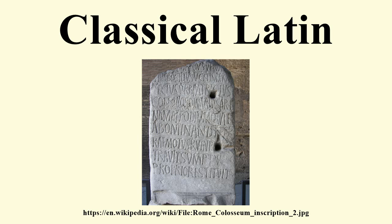In 1870, Wilhelm Sigismund Teuffel in Geschichte der Römischen Literatur innovated the definitive philological classification of classical Latin based on the metaphoric uses of the ancient myth of the Ages of Man. A golden age and a silver age of classical Latin were presumed. Teuffel's classification, with modifications, is still in use. His work was translated into English by Wilhelm Wagner, who published the English translation in 1873. Teuffel devised the chronology of classical Latin authors into several periods according to political events, rather than by style.